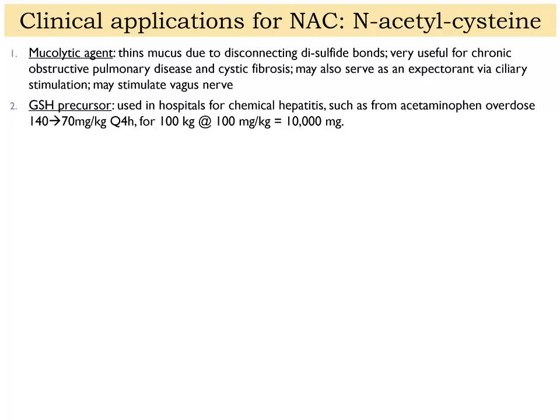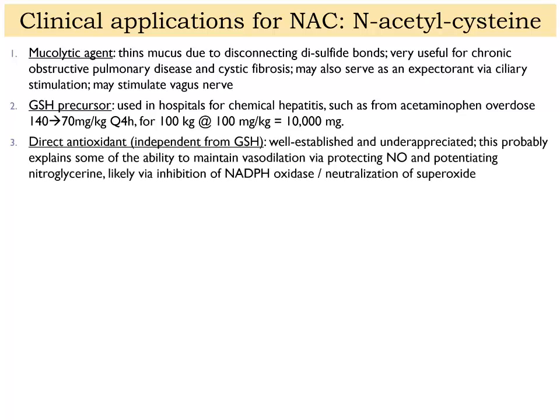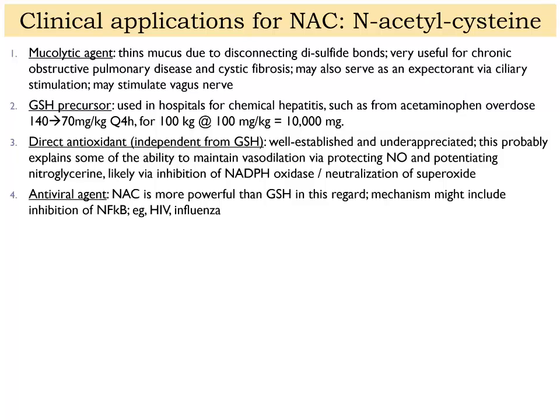NAC is a glutathione precursor, so it is used in various cases of chemical hepatitis. Tylenol or acetaminophen overdose is the classic example. NAC is also a direct antioxidant independent from its ability to form glutathione. It is also an antiviral and immunoprotective agent — patients with HIV usually have glutathione and cysteine deficiency, and when they receive NAC they experience some degree of immune restoration through increased glutathione production.